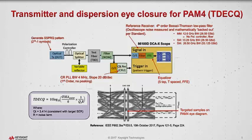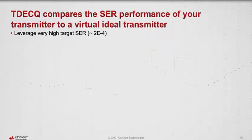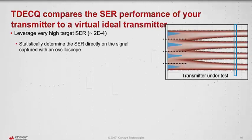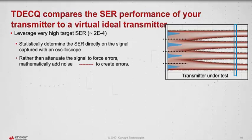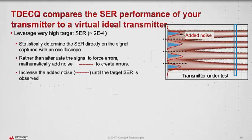Let's look more closely at what's happening as part of the TDEC-Q measurement. We're leveraging the fact that the link signal is operating with a very high symbol error ratio on the order of 2 times 10 to the minus 4. The first step is to statistically determine the SER on your DUT using an oscilloscope. Rather than attenuate the signal to force errors as done with TDP, we mathematically add noise to create errors, continuing to add noise until the target SER is observed.